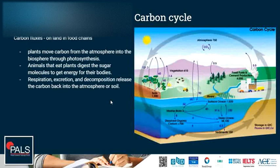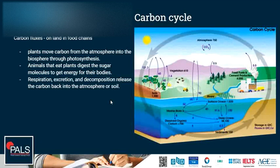Let's have a look at the fluxes on land in food chains. Plants move carbon from the atmosphere into the biosphere through photosynthesis. Animals that eat plants digest the sugar molecules to get energy for their bodies. Respiration, excretion, and decomposition release the carbon back into the atmosphere in the form of carbon dioxide, or into the soil in the form of remains.